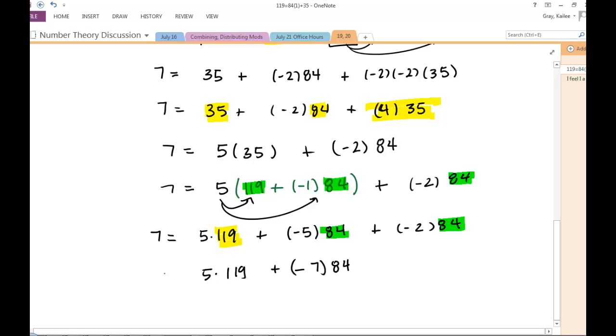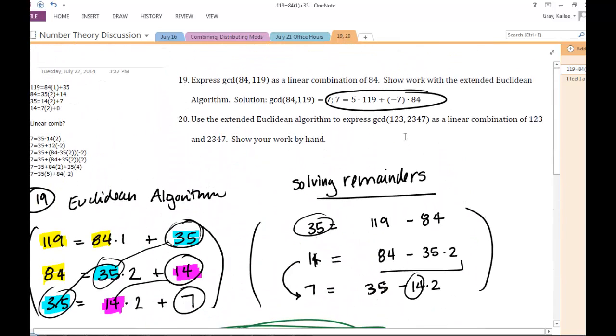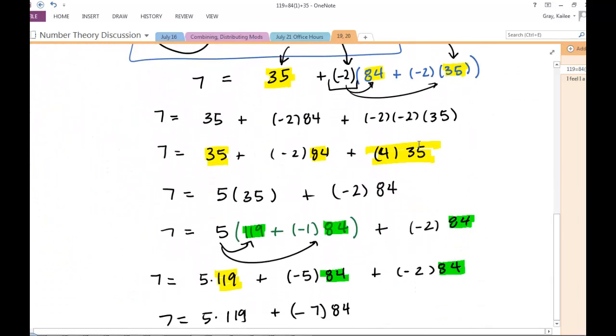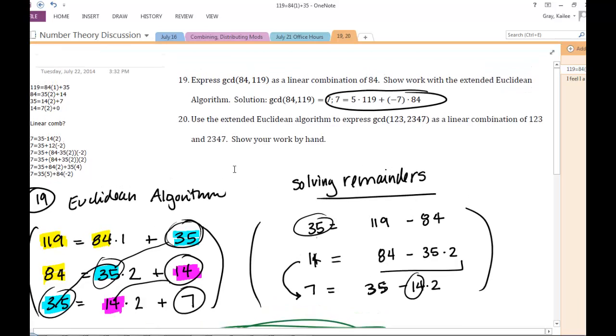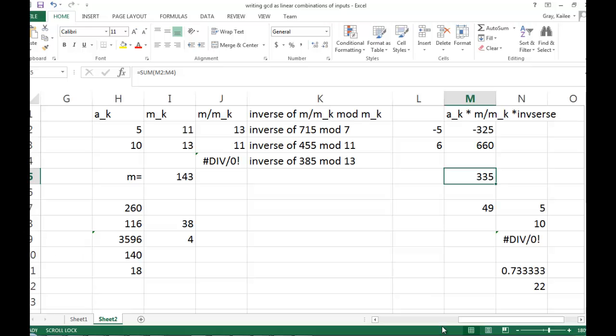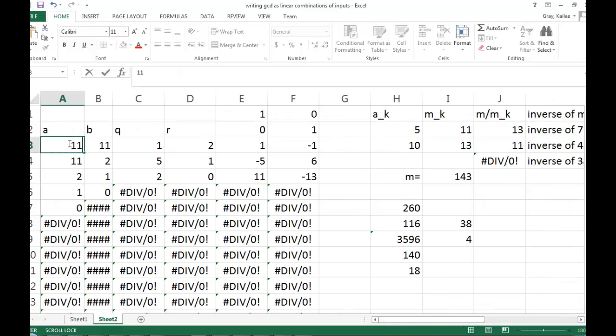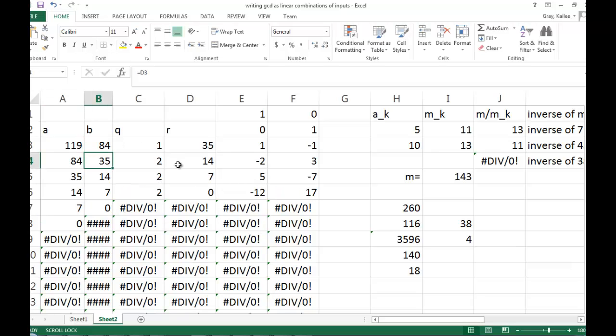Now let's make sure that I did that. So always, once you get to that linear combination, multiply it out with your calculator to make sure that you did it all correctly. And then also check it with that Excel spreadsheet that we built in one of those videos that's posted. If I type in 119 and 84, I get 5 and negative 7. That's good. 5 and negative 7, these are those coefficients. So everything looks good.